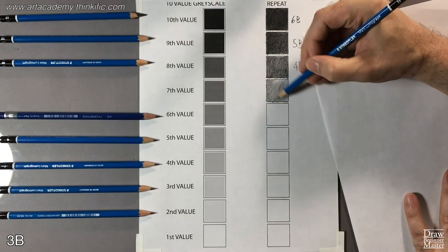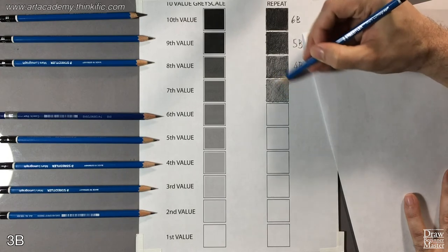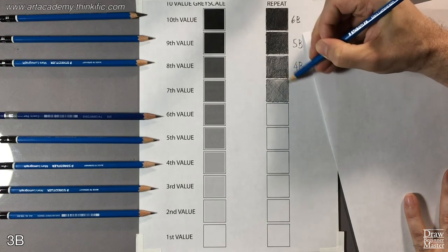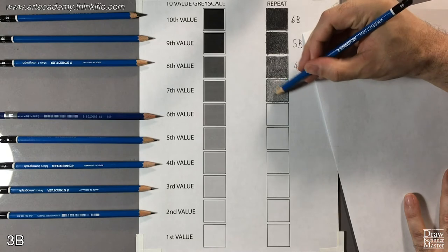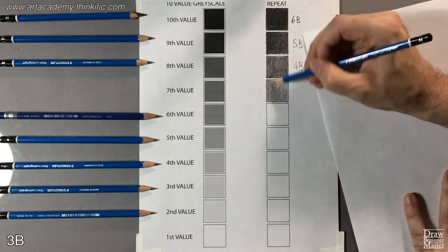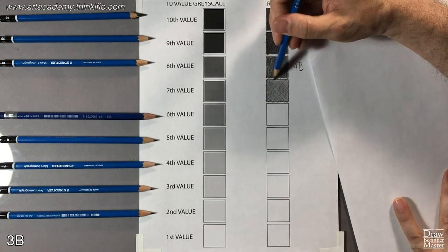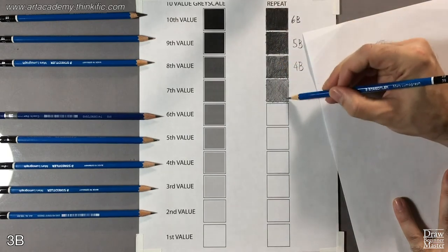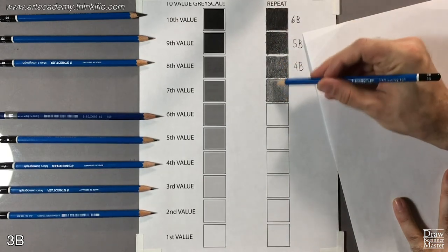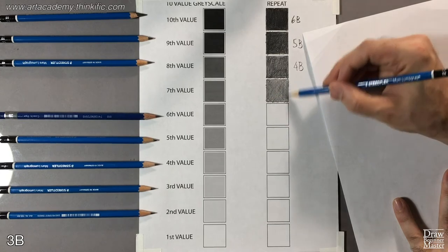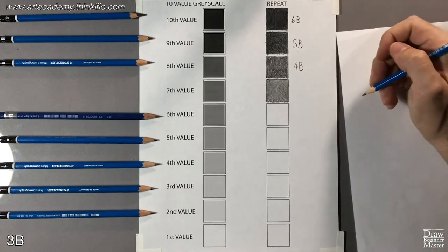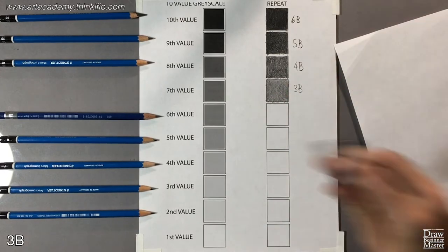For example, I prefer a pencil with a hard lead, like an H, for drawing the wrinkles in a white sheet. And I prefer a softer, 3B lead for drawing dark hair or eyelashes. But I'll go into a much more detailed explanation of each lead's use, and the mechanics of each type of shading as we progress into lesson two. For now, I just want you to learn the ten value scale, and get acquainted with your pencil set.